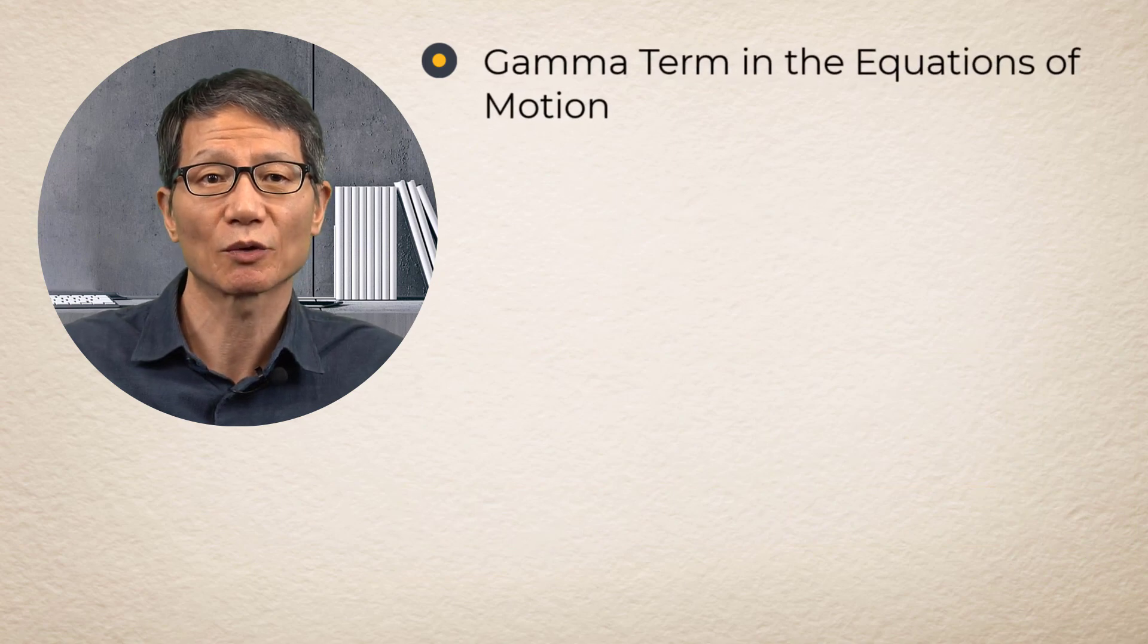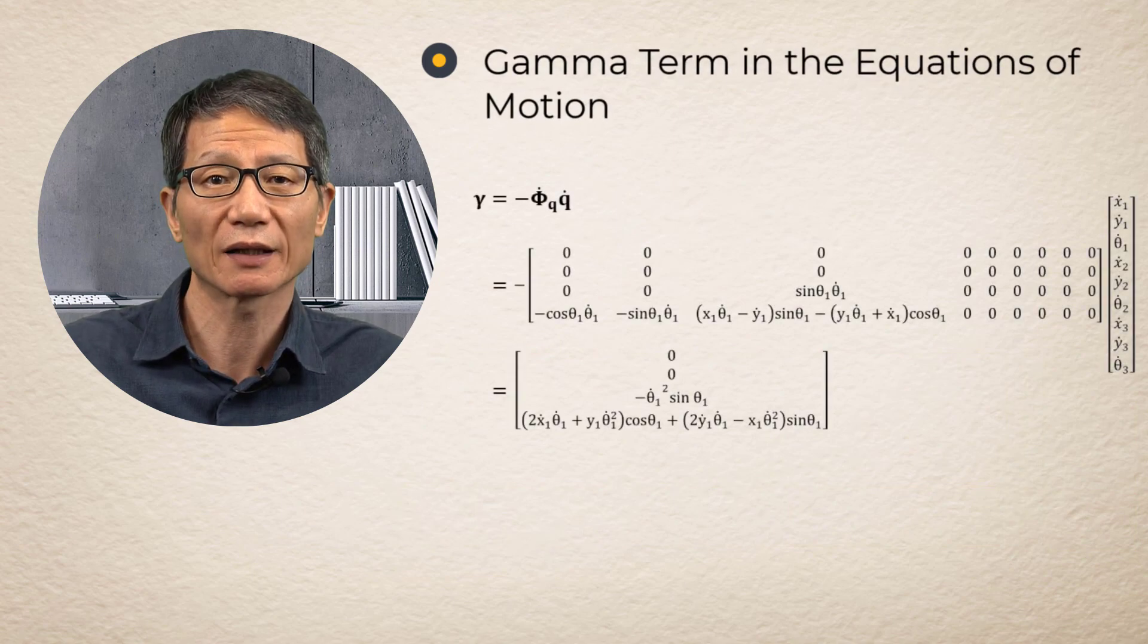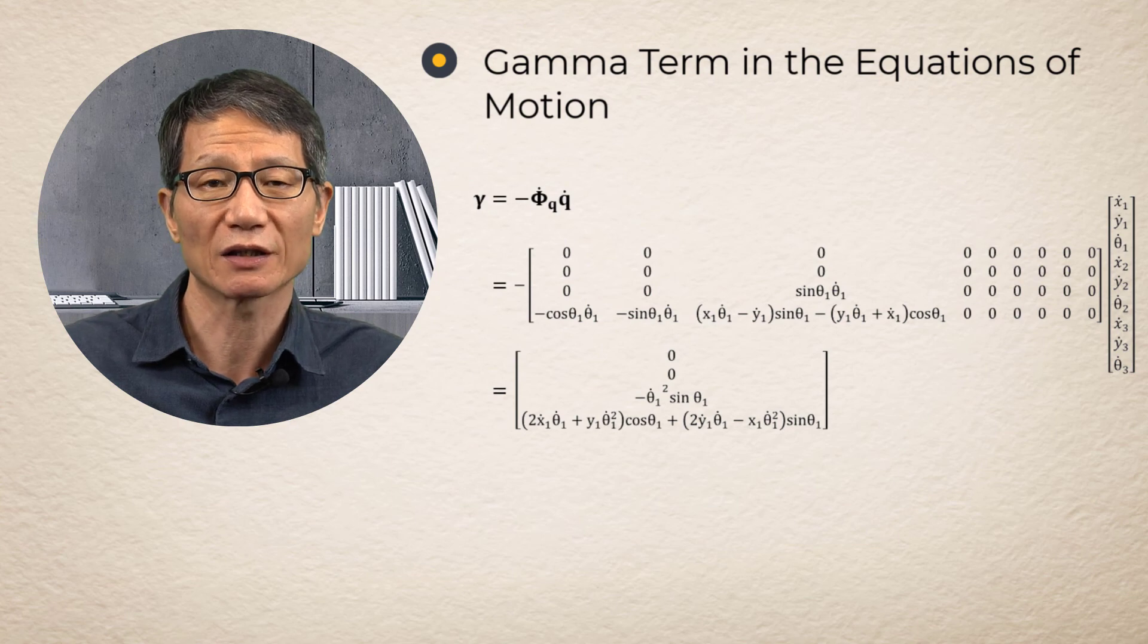Gamma term in the equation of motion. The right-hand side of the constraint is obtained as in this equation.